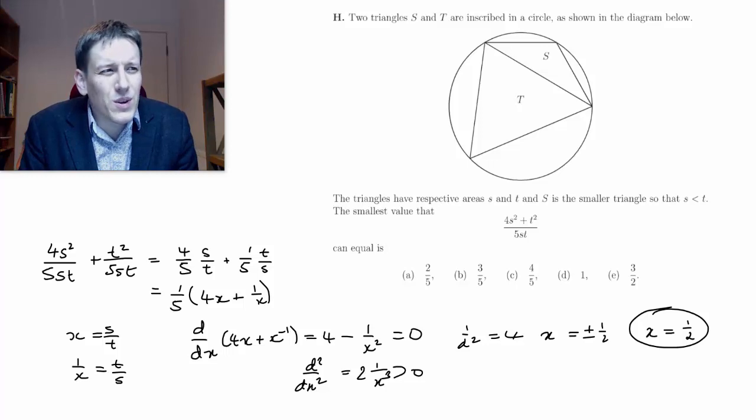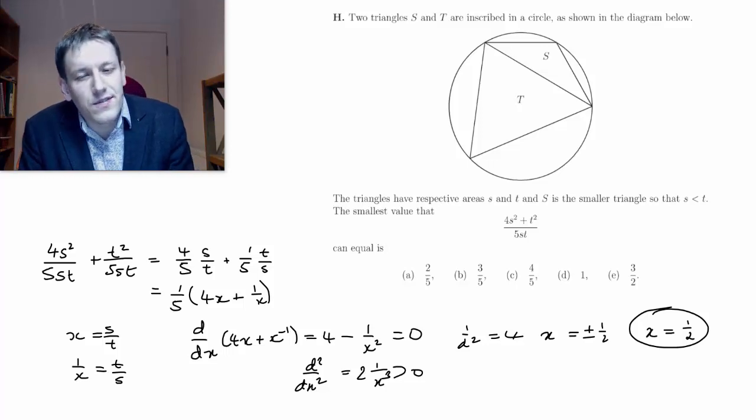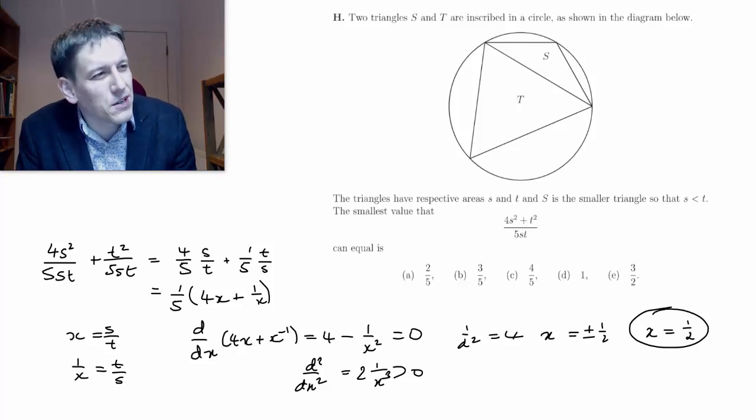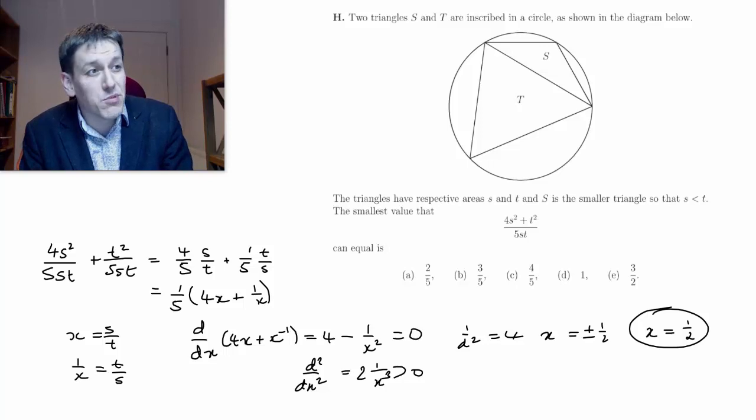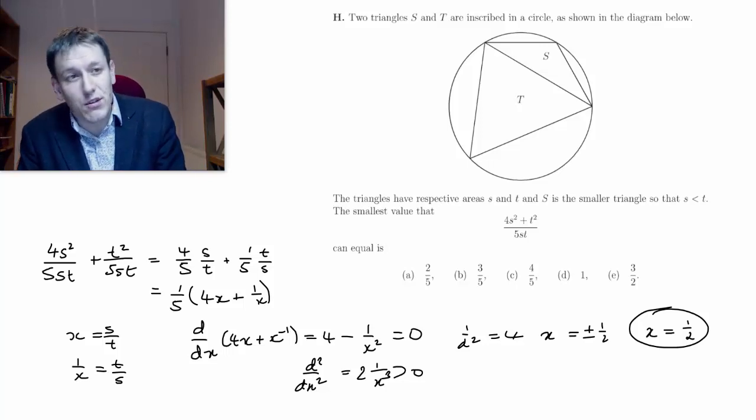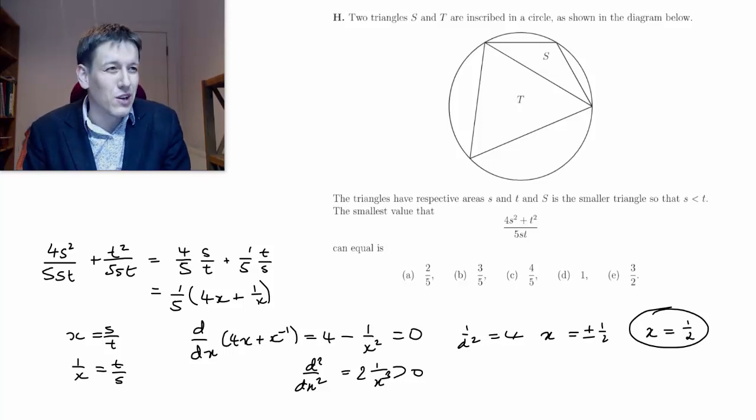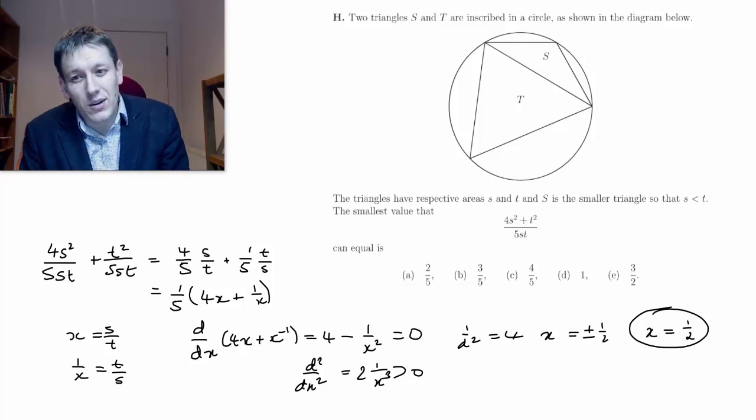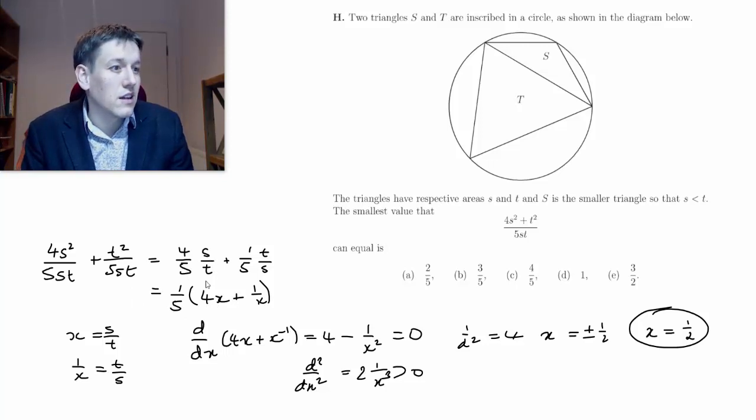And so the question is, can I actually find a ratio s over t that gives us this minimum for x? Because if I can, then that must also be the minimum of this expression for that area. Now, if I couldn't find the ratio that leads to x equals 1 half, I've got a bigger problem. But really, once I've written the function in this way, I've got a minimum for this x. So it's just really a question of, is it possible to find s over t in that ratio?